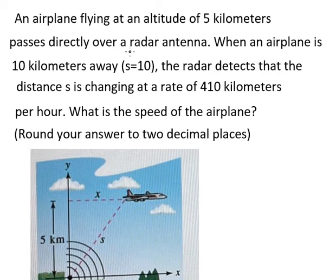When an airplane is 10 kilometers away, the radar detects that the distance s is changing at a rate of 410 kilometers per hour. What is the speed of the airplane? Round your answer to two decimal places.